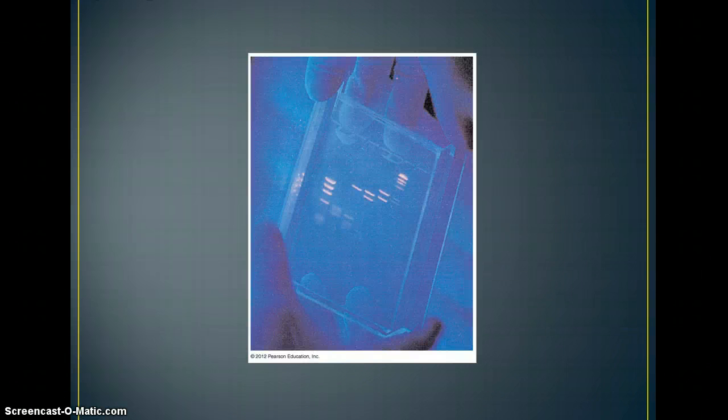Here's a picture of one. This is one that they used an ultraviolet light to show. There are different ways to treat the gels to make the bands visible. Sometimes it involves dyeing something and sometimes it involves using a marker that will show up in fluorescence, like this one does.